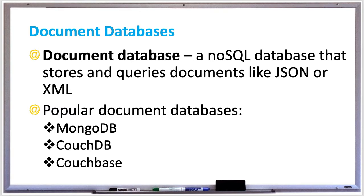A document database may support strict consistency, where all updates affect the primary replica first and then make their way to the secondary replicas. All read queries read the primary replica in order to get the most current document. In case it fails, the secondary replica takes over as the primary. Strict consistency is slower and not as available as eventual consistency.